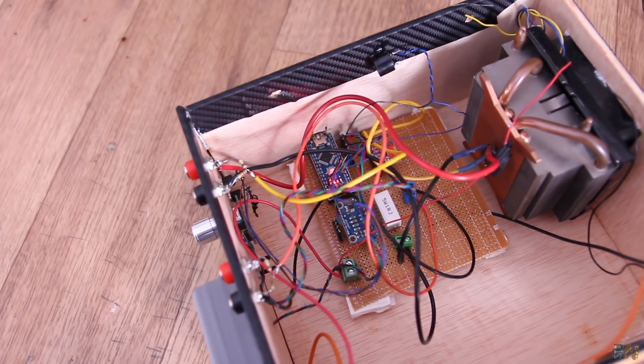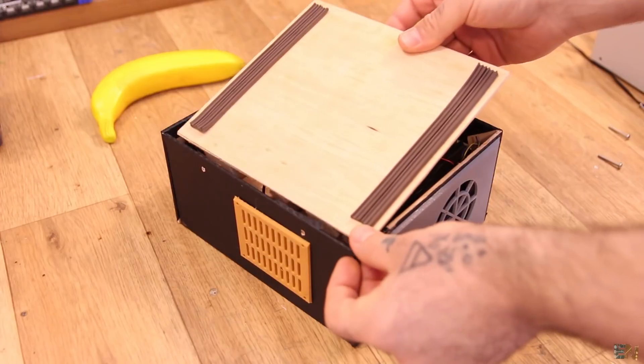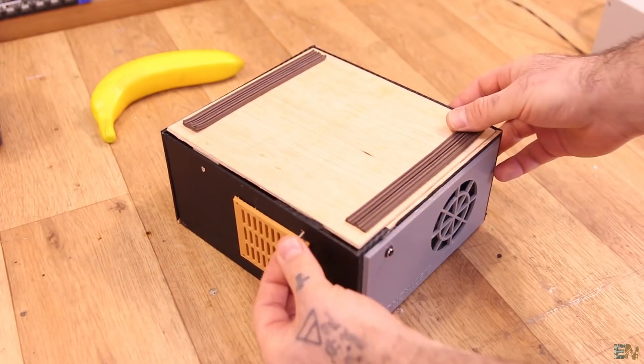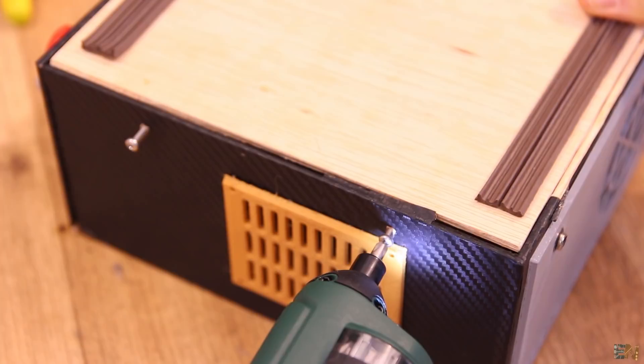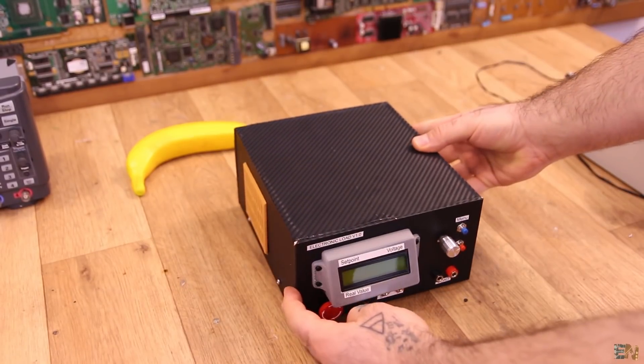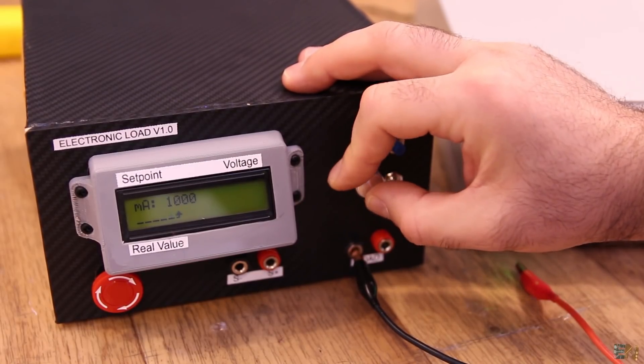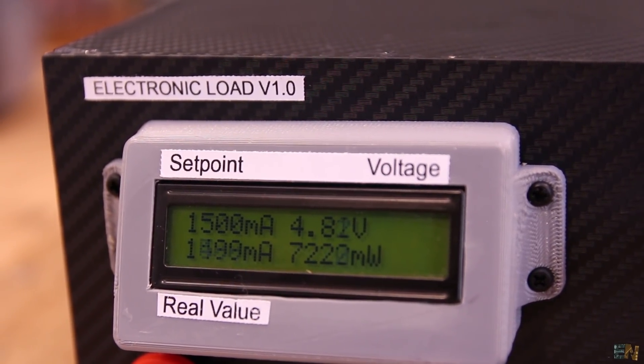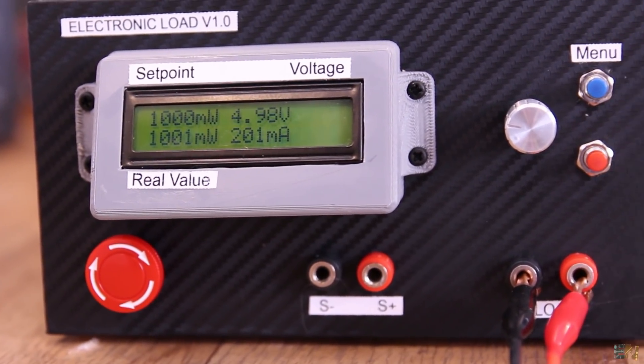So guys, I can now close the bottom part of the case. We have 4 screws for that. I tighten the screws and the electronic load project is ready. If you want, you could add some labels on the front part to make it look better. Some labels for the information on the screen, one for the menu button and two more for the input terminals.